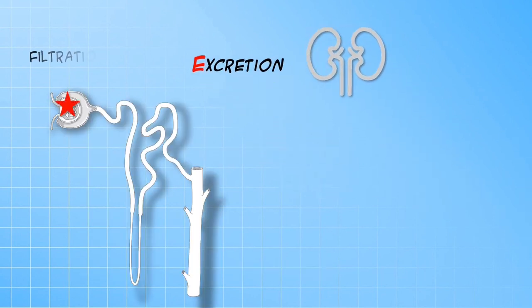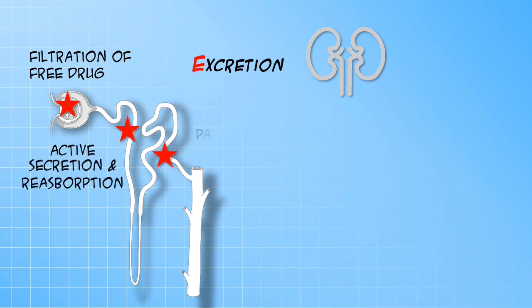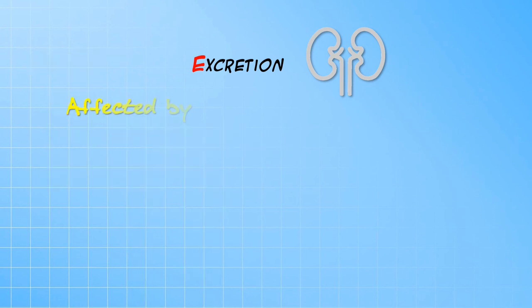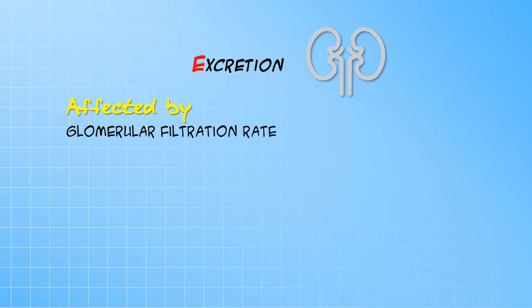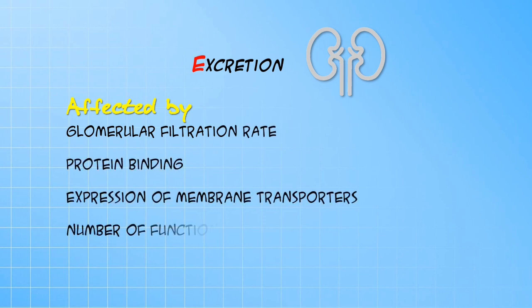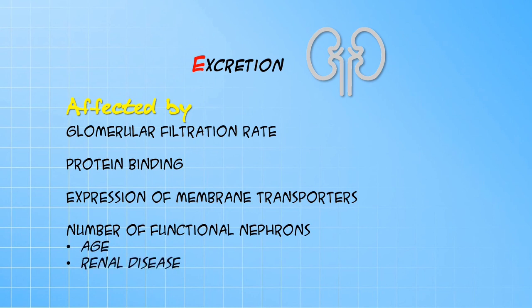Excretion occurs primarily through the kidneys via a number of specific processes aligned along the renal tubules. Renal elimination is therefore dependent on factors such as glomerular filtration rate, protein binding, expression of specific transporters in the renal tubular cells, as well as the number of functioning nephrons. This will be dependent on age and the presence of renal disease.